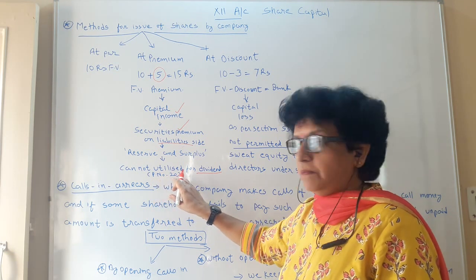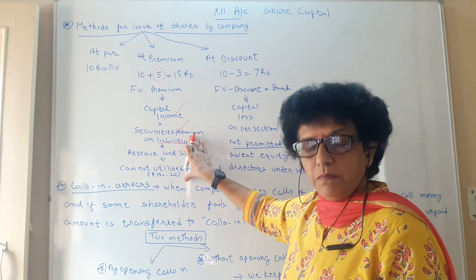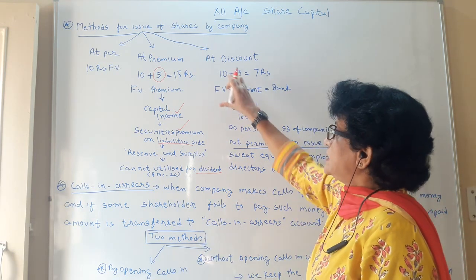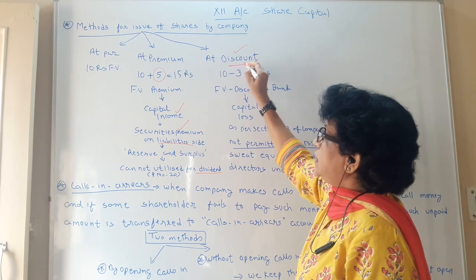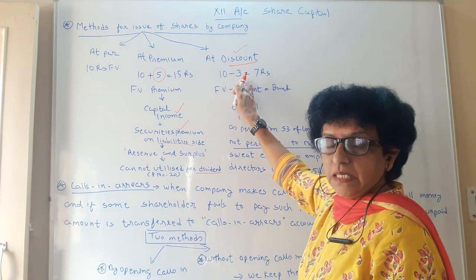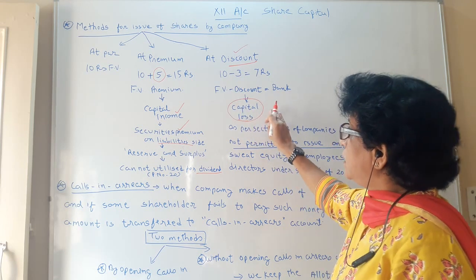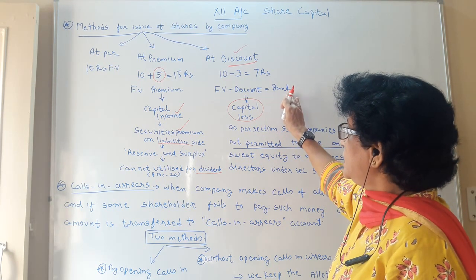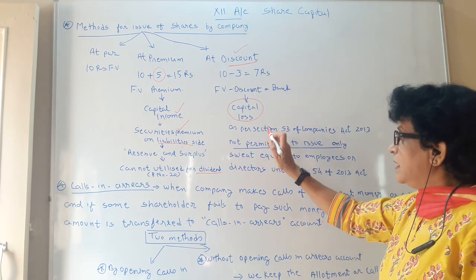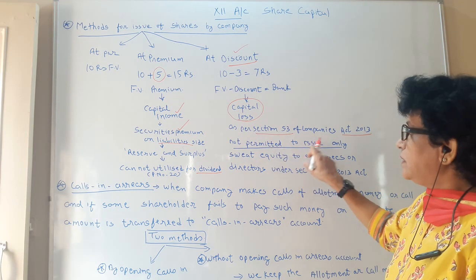You can refer to textbook page number 20 to get more about security premium. We will continue with this topic and write example journal entries on how to record the security premium when a company earns it. The next method is at discount — the company is asking less than the face value. If the face value is 10 rupee, 3 rupee discount is given and shares are issued at 7 rupee. This is going to be a capital loss for the company. As per section 53 of the Companies Act 2013, it is not permitted to issue shares at discount.